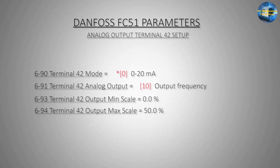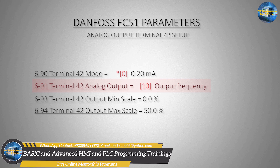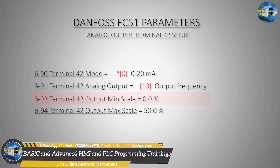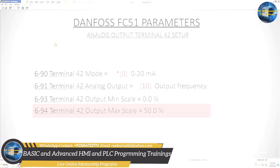Next we will set up parameters for the analog output terminal 42 of the VFD, which will be used to send an analog signal back to the PLC. We set parameter 6-90 to 0, which sets the output signal range as 0 to 20 mA. Next we set parameter 6-91 to 10 — now this terminal will send an analog output signal from 0 to 20 mA proportional to the output frequency of the VFD. We scale the analog output minimum as 0.0% and maximum as 50.0% using parameters 6-93 and 6-90. For more details on these scaling parameters, refer to the Danfoss FC51 VFD user manual.